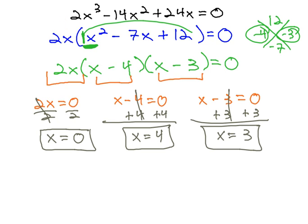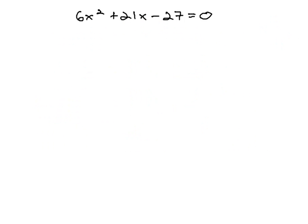Let's try one more example with a GCF, just to make sure we've got this process down. 6x² + 21x - 27 = 0. It already equals 0, so all we have to do is factor.